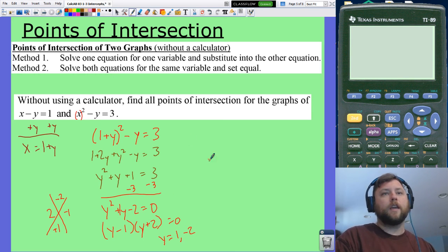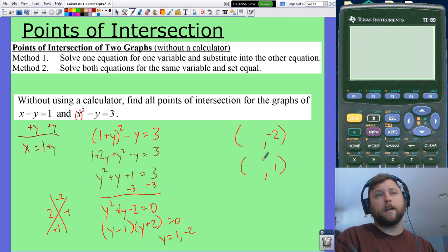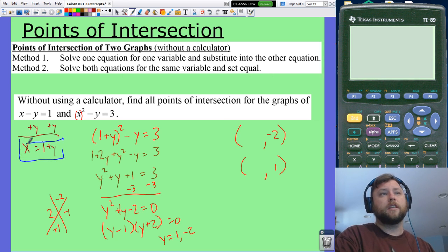The points where they intersect, there's going to be two points. One of them happens when y is negative 2, and one happens when y is 1. Now you've got to figure out the corresponding x values. How do you do that? Plug into any equation. We can actually just plug into this one.